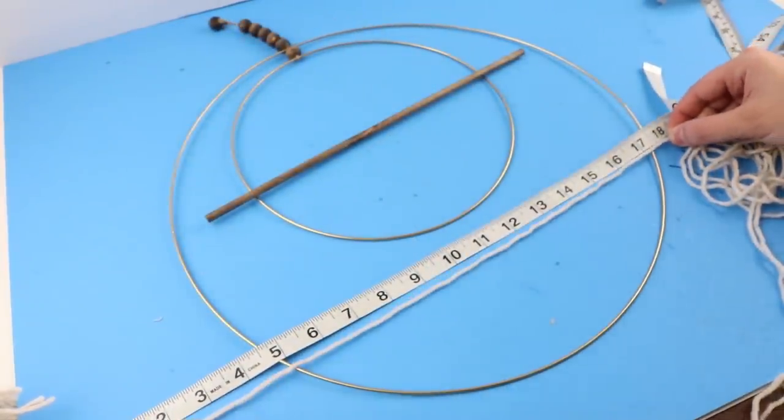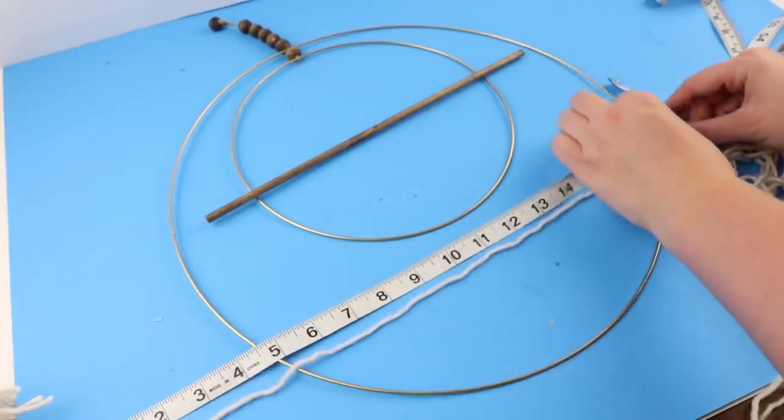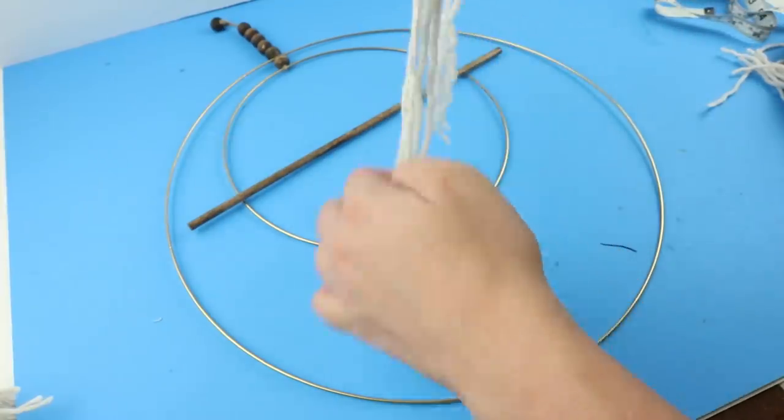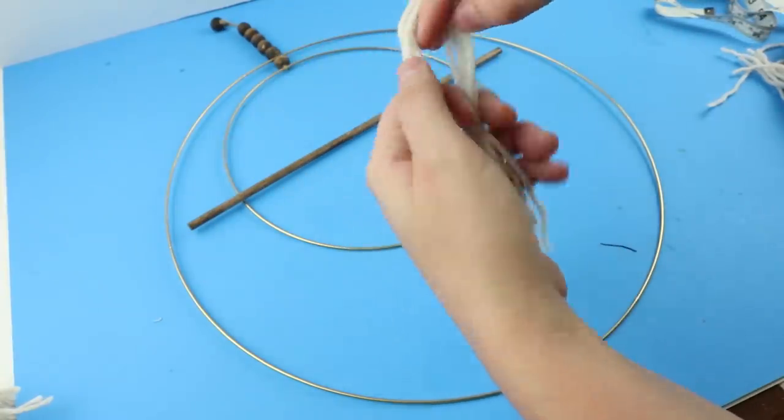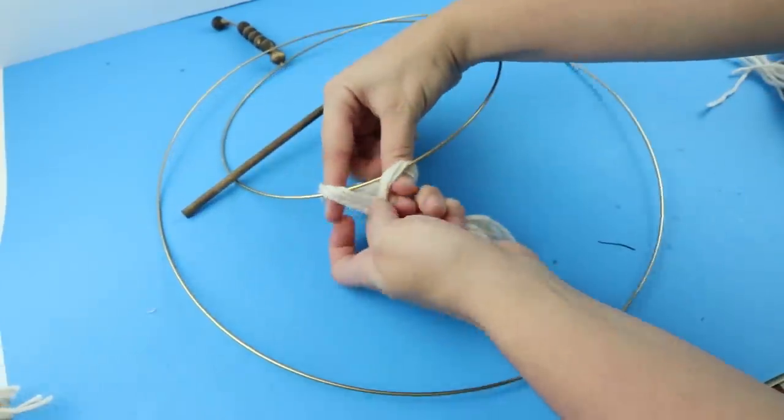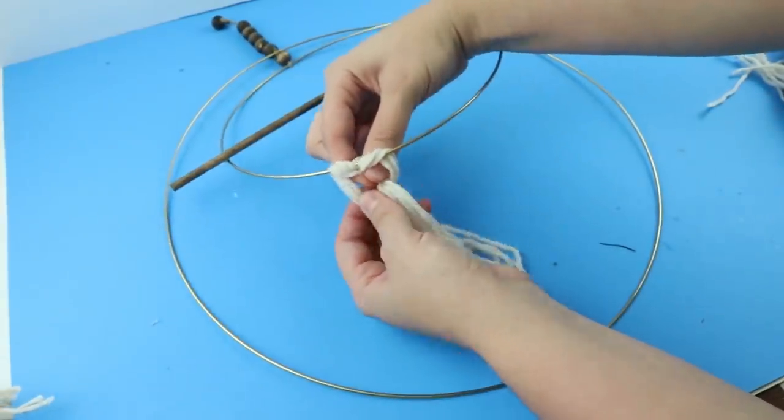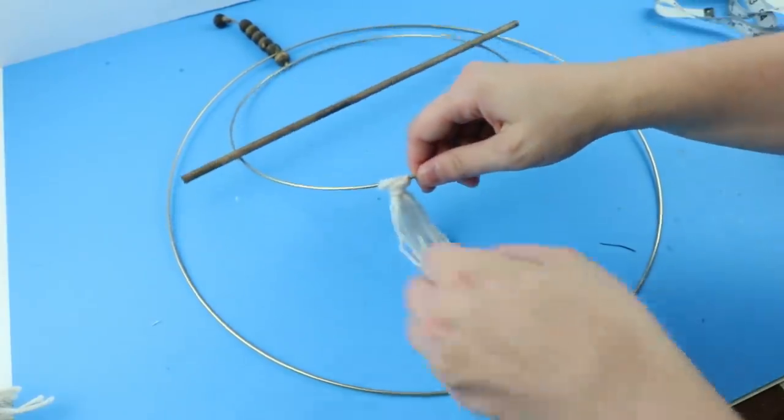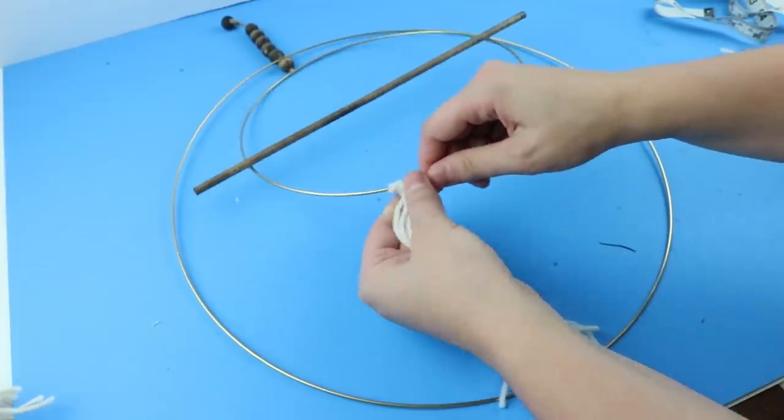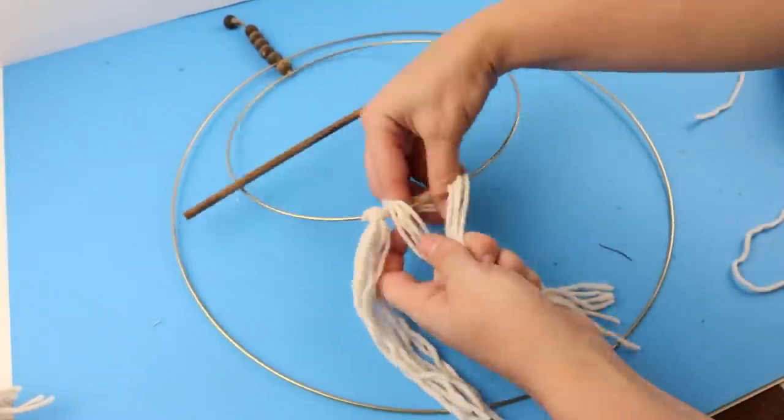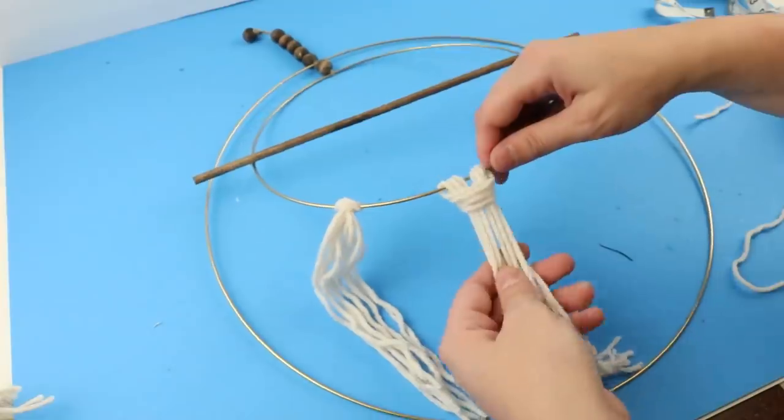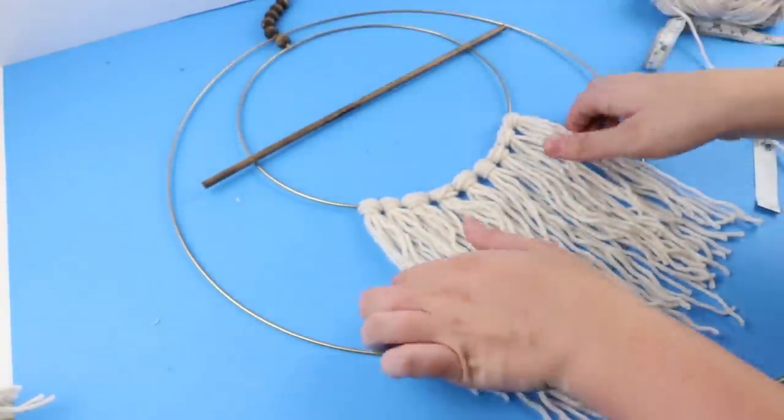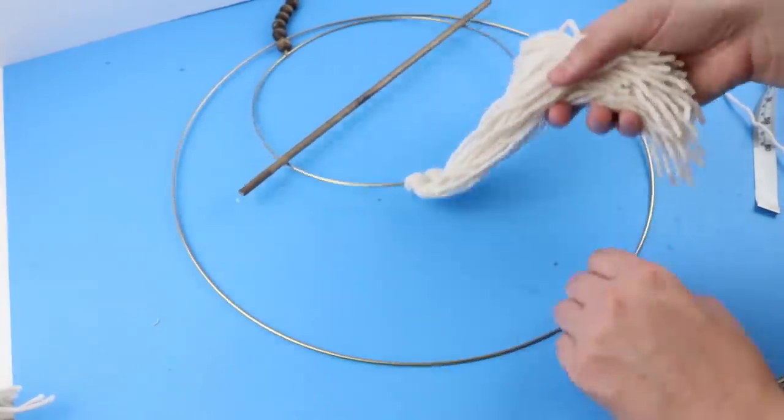The yarn that I will be using for the smaller ring is this white yarn from Dollar Tree and I will be cutting them at 18 inches long. After you have your 18 inch pieces cut, you will fold it in half in a group of five and then wrap it around the ring. With the first ring finished, just lift up that yarn and we will work on the next ring.